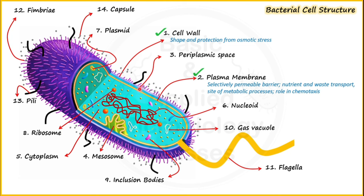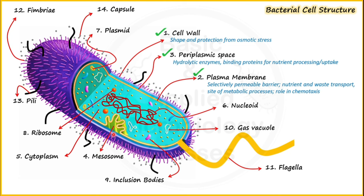The periplasmic space, as already mentioned, is the space between the cell wall and plasma membrane. This space is known to contain hydrolytic enzymes and binding proteins for nutrient processing and uptake. Now regarding the mesosome — a membrane invagination or infolding — mesosomes are known to play an important role in replication and in cell wall synthesis of bacteria.